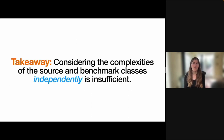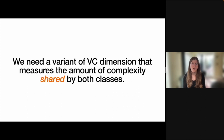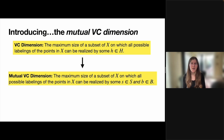Hopefully working through this example has helped clarify that if we want to understand the sample complexity of comparative learning, it's insufficient to consider the complexities of these two hypothesis classes individually. What we really care about is the interaction between the two classes, specifically the amount of complexity that they share. And in our paper, we introduce a natural extension of the VC dimension intended to capture this shared complexity. We've called this the mutual VC dimension.